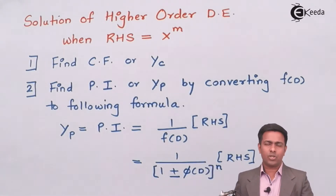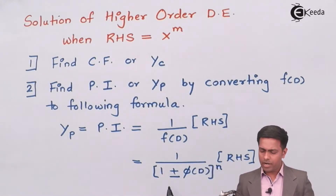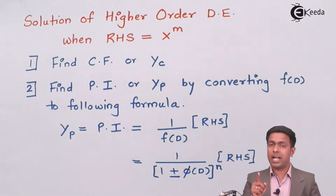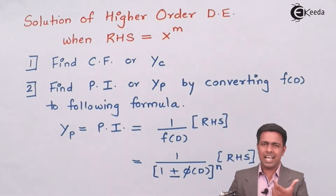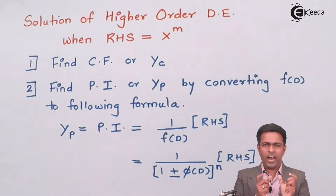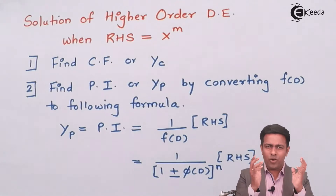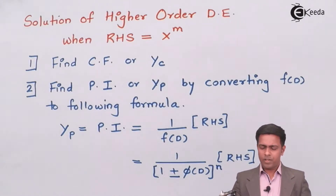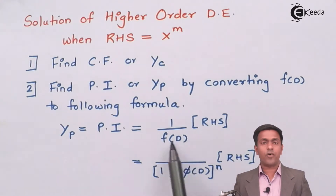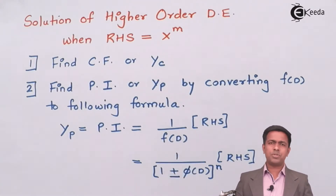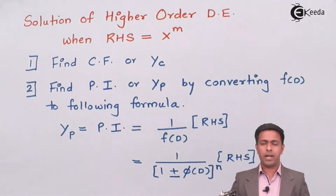When it comes to the numerator, the power n becomes negative, giving us 1 plus or minus φ(D) raised to minus n. We can then find the value of that bracket using the expansion formulas. So we must first bring f(D) into this form.